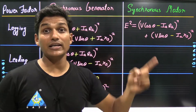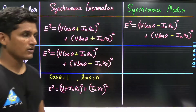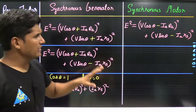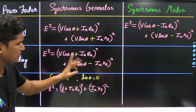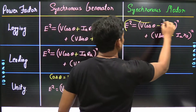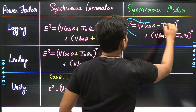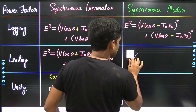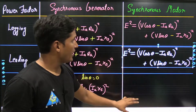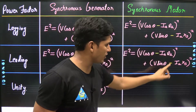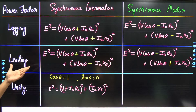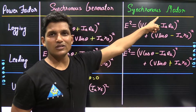At leading power factor for a synchronous motor, just as in the synchronous generator we change the sign of the V sin θ term, we do the same here. At lagging power factor it was minus, so at leading power factor it becomes plus. This gives the formula for induced EMF at leading power factor for a synchronous motor.